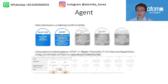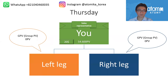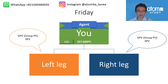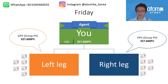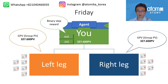For example: on Thursday you buy five HemoHIMs yourself, giving you over 300,000 personal PV, which makes you an agent. Then on Friday, six HemoHIMs are bought on your left leg and six on your right leg. Because you're an agent, you receive sixty dollars — the same sales, three times the reward. It's always worth accumulating your personal PV.